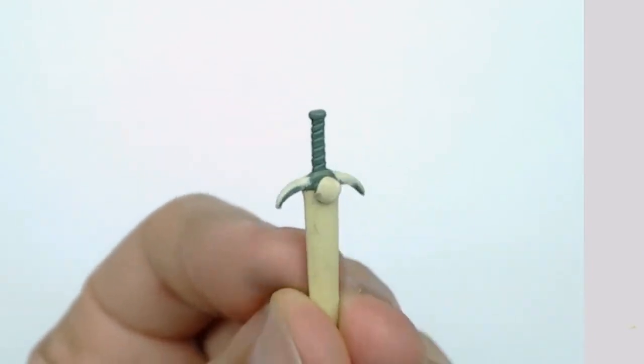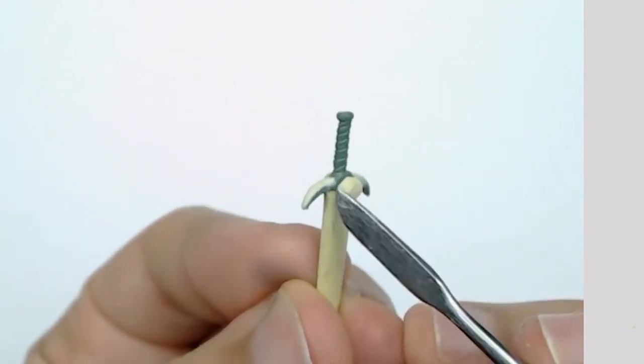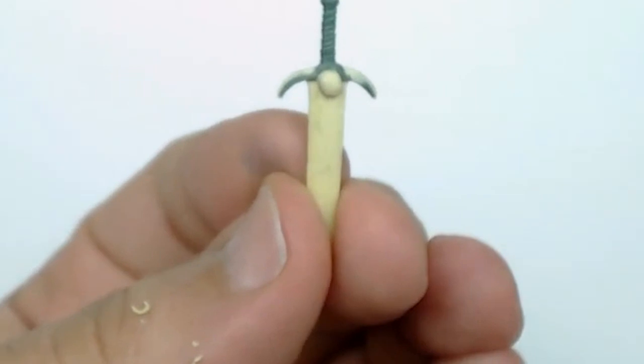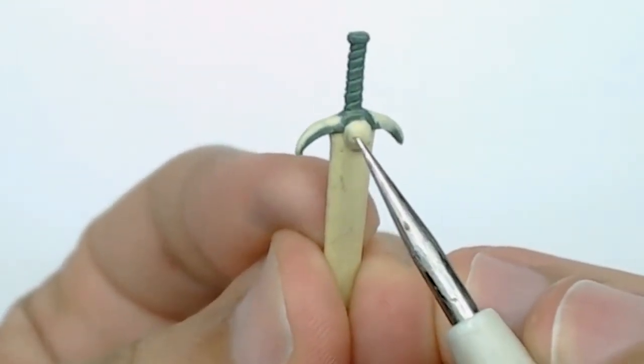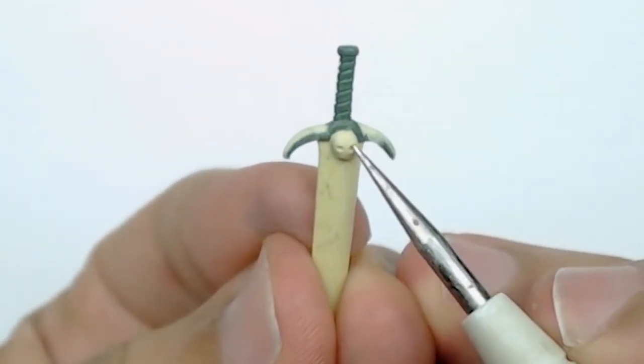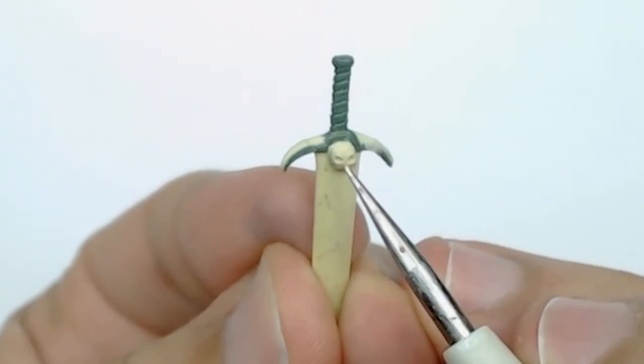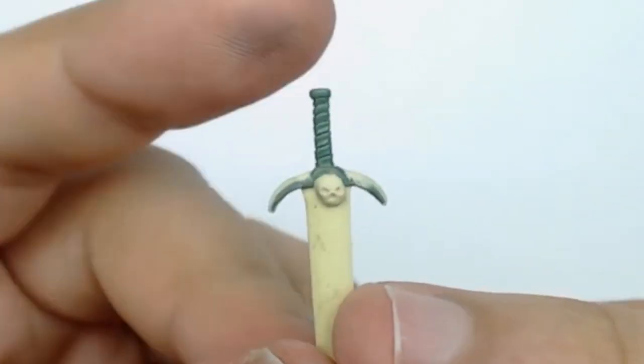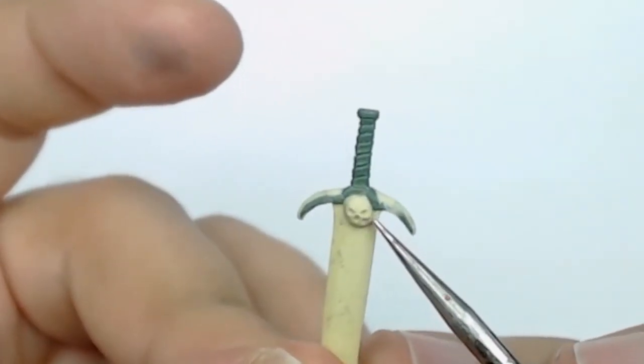Now I'm going to start making a skull. For that, I'm going to use a little ball tool at the end just to create the different forms on the skull.